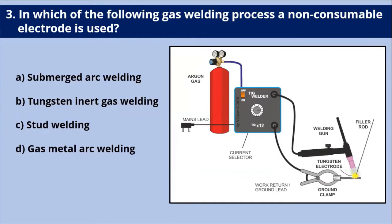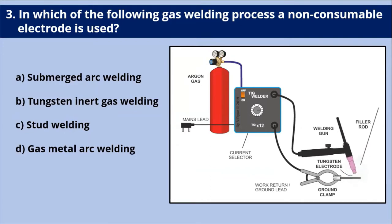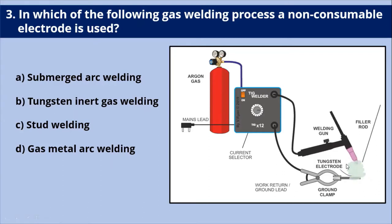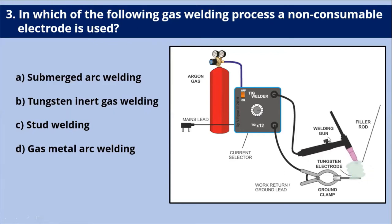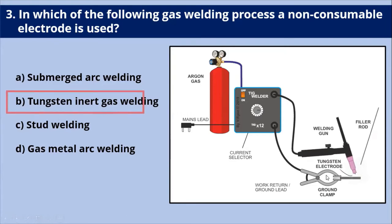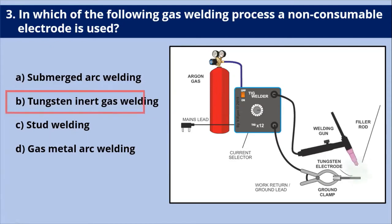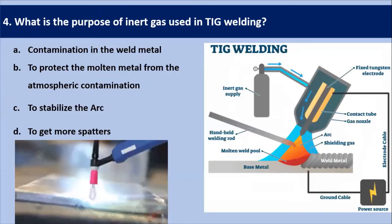Next question: in which gas welding process is a non-consumable electrode used? In tungsten inert gas (TIG) welding, a non-consumable electrode is used, which is made of tungsten and does not melt during welding. Filler metal can be added separately, as shown in the diagram. That's why the answer is TIG welding — non-consumable type electrode.